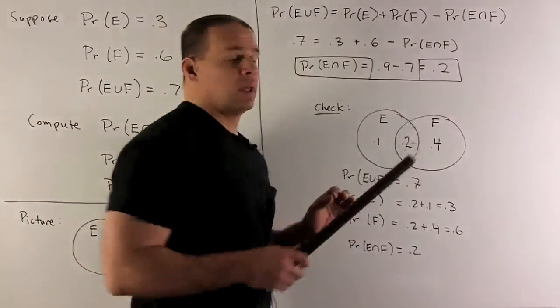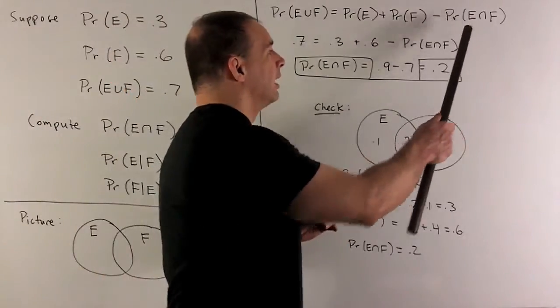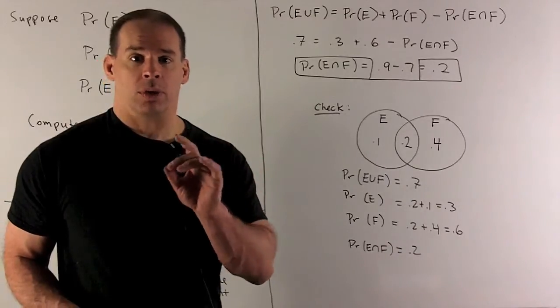So this is our formula, and we note, we're looking for the probability of the intersection, and I'm given the three other items. So I can solve for what we're looking for.